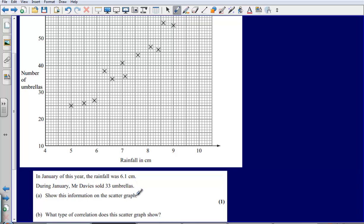Show this information on the scatter graph. So first of all, I need to find where 6.1 is on my rainfall axis. My rainfall axis is 6.1 at this point here. Then I need to find where 33 will be, so I need to go up to 33, there's 30.